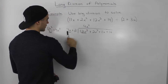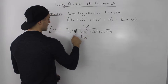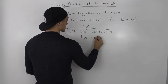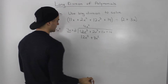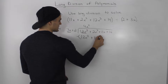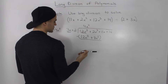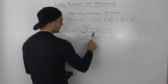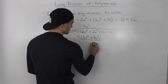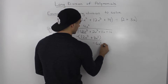Then 4x squared times 3x is 12x cubed, and 4x squared times 2 is 8x squared. Now we subtract these: 12x cubed minus 12x cubed is just 0. Then 2x squared minus positive 8x squared gives us negative 6x squared, and we bring down the 11x and the 14.